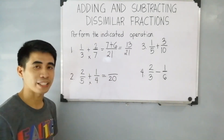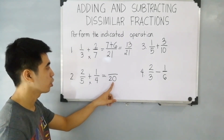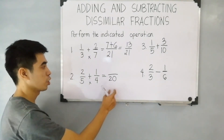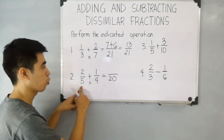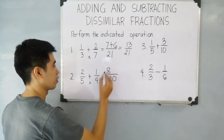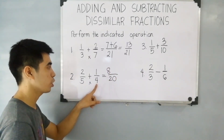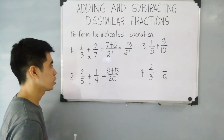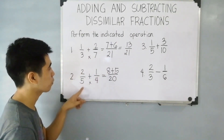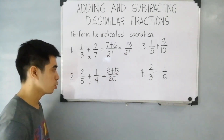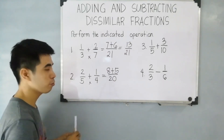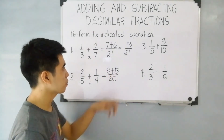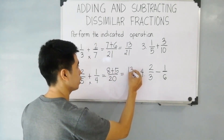Now proceed to the next step: divide this LCD, which is 20, by each denominator — 5 and 4 — then multiply it to the numerators. So 20 divided by 5 is 4, times 2, that is equal to 8. Then 20 divided by 4 is 5, times 1, that is equal to 5. Or just multiply 2 times 4 to get 8, and 1 times 5 to get 5. Note: we only use this cross-multiplication when the LCD is found by multiplying the denominators. So now, combine 8 plus 5, that is equal to 13 over 20.